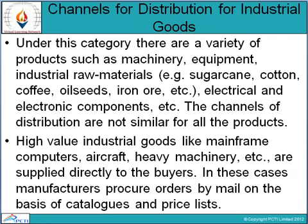For industrial goods there are a variety of products such as machinery, equipment, and industrial raw materials — for example sugar cane, cotton, coffee, oil seeds, and iron ore — as well as electrical and electronic components. The channels of distribution are not the same for all products. High value industrial goods such as mainframe computers, aircraft, and heavy machinery are bought directly by buyers, with manufacturers procuring orders through catalogs and price lists.